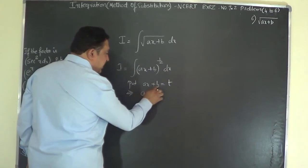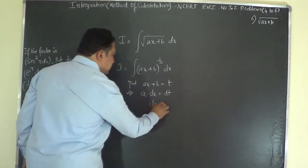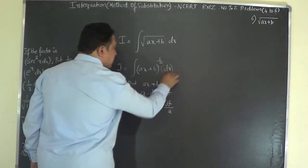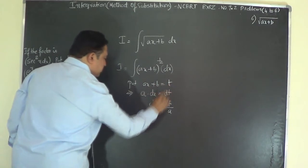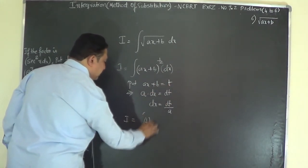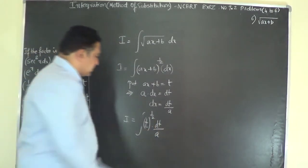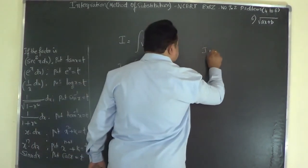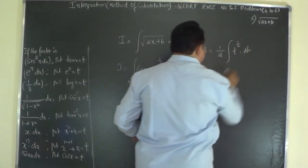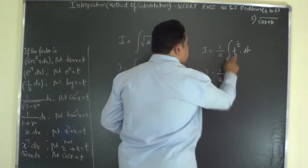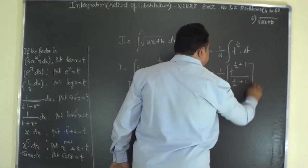Differentiating ax + b equals t: A dx equals dt, so dx equals dt/A. Substituting into the integral: I equals (1/A) ∫t^(1/2) dt. Integrating, we get t^(1/2 + 1) divided by (1/2 + 1), which is t^(3/2) over (3/2), plus C. So I equals (1/A) · t^(3/2) / (3/2) plus C.